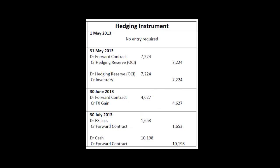So on the 1st of May, we don't do anything because the fair value of what we just calculated was zero. You could have an entry, but it'd just be debit zero, credit zero, so there's no point.